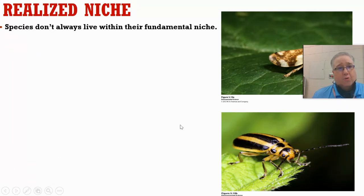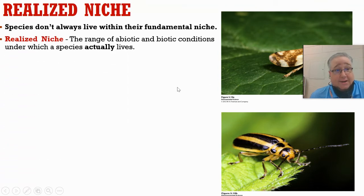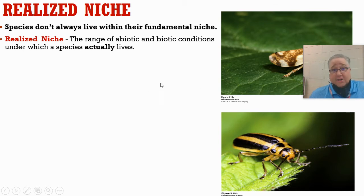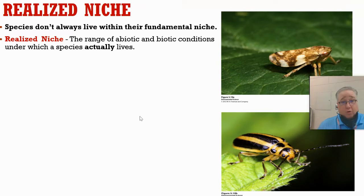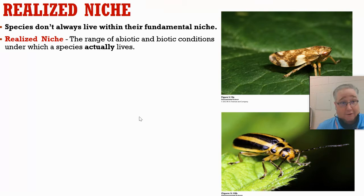A couple more terms — one is called realized niche. Species don't always live within their fundamental niche; they don't necessarily always live under those ideal conditions. The realized niche is just the range of conditions that they actually live in. For example, polar bears may function best in a certain range of temperatures, but that doesn't mean they're currently living in those ranges. Right now, polar bears are probably living outside of their fundamental niche because of global warming. So they're living in their realized niche — a certain set of conditions, but not necessarily perfect ones.